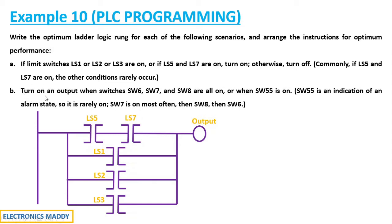Problem B goes like this. Turn on an output when switches S6, S7 and S8 all are on or when S5 is on. S5 is an indication of an alarm state, so it is rarely on. S7 is mostly on then S8 then S6. At first, let us have the switches and then let us place them. S6, S8 and S7.